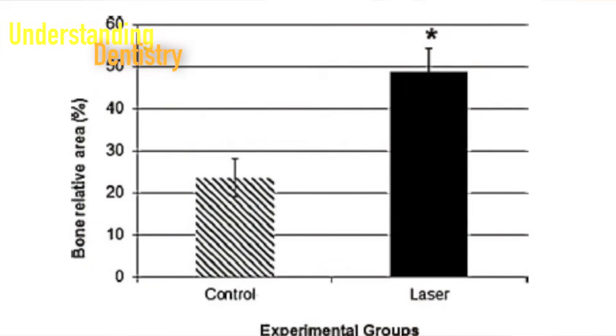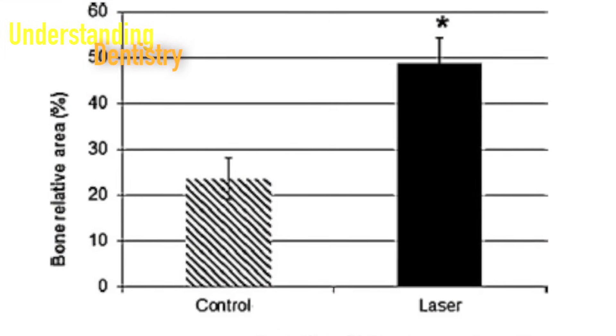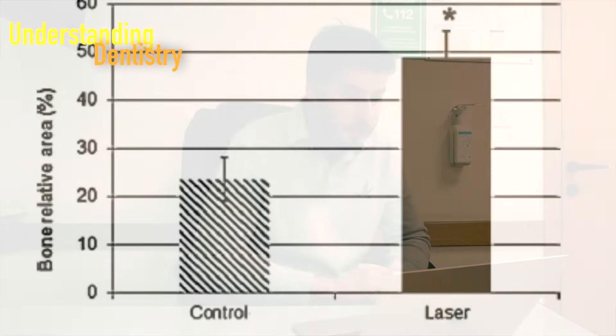The test used here is the Student t-test because normality was confirmed for this sample. There are other variables and comparisons, but the main comparison is shown in a bar graph — Figure 4 — displaying the percentage of bone with the central tendency of each group represented in the bars.